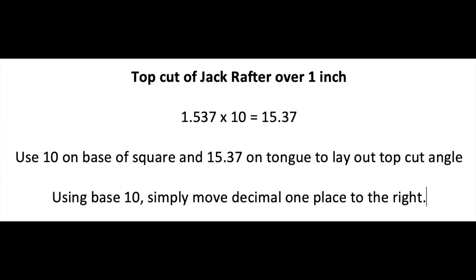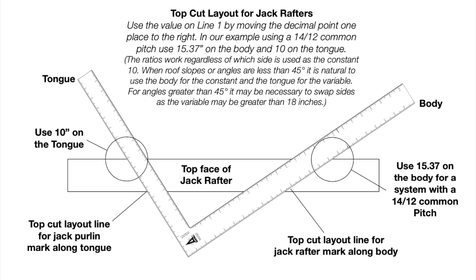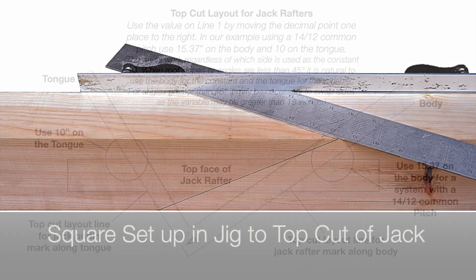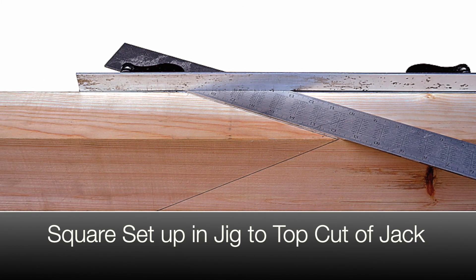To mark the layout angle of the jack rafter using the universal square, simply move the decimal point over one place to the right and use this opposite 10 on the tongue of the square. In this case, the jack rafter top cut angle can be marked on the timber by using 15.37 on the body and 10 on the tongue. Marking along the body of the square, in this case, will designate the top cut angle of the jack rafter.